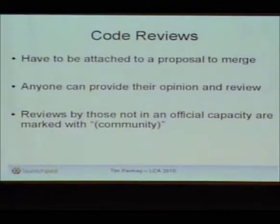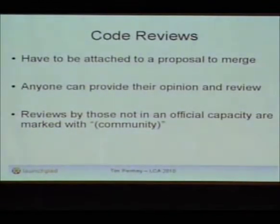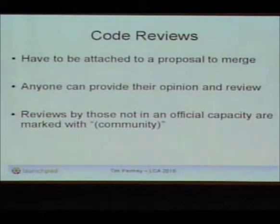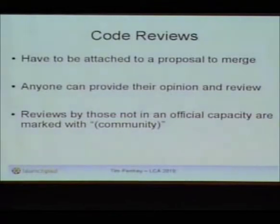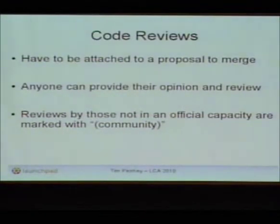We have those who are in an unofficial capacity. The definition of unofficial capacity is effectively the person that doesn't have write permission on the target branch. So I could come into somebody else's Drizzle branch and comment on it and say 'this is a load of rubbish, you should do it this way because it's cooler,' and I would get a little 'community' label after my name in the review.